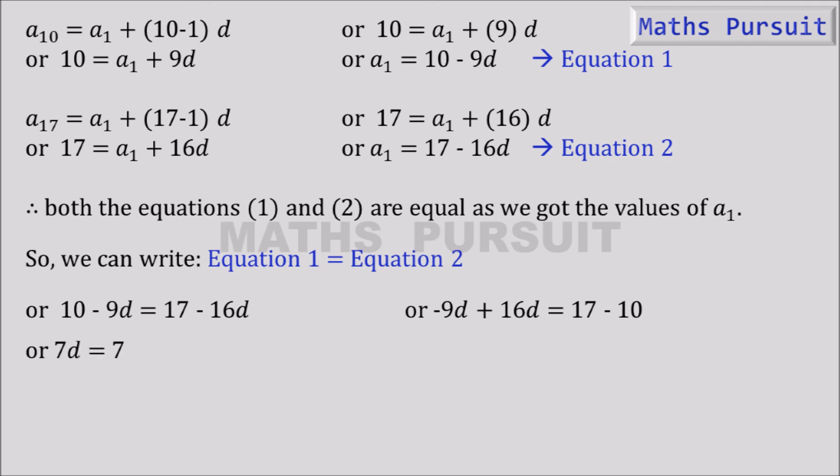Or 7d is equal to 7, or d is equal to 7 by 7, or d is equal to 1. Therefore, the common difference is 1.